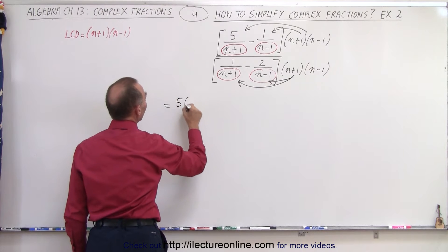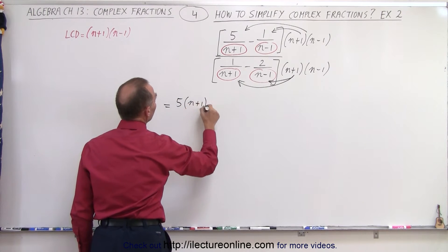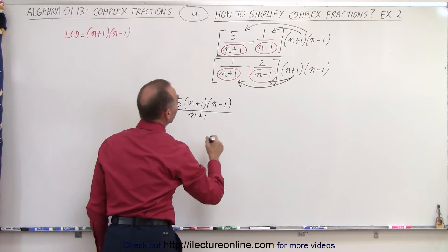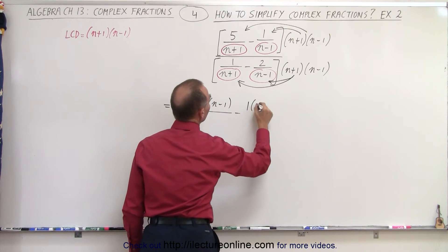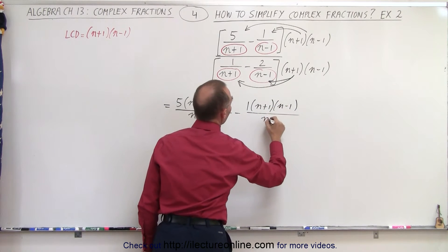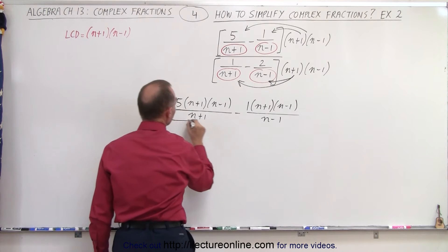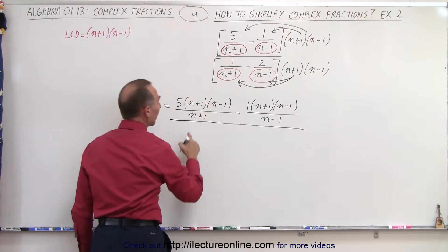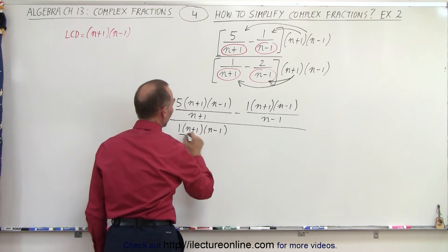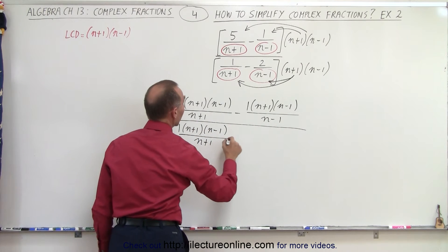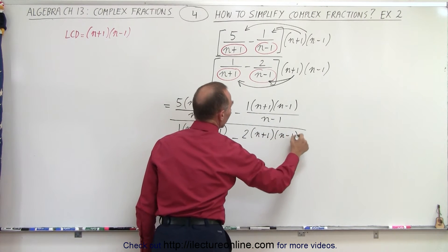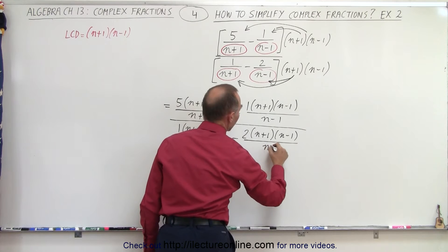This is 5 times n plus 1 times n minus 1 all divided by n plus 1. And that's minus 1 times n plus 1 times n minus 1 all divided by n minus 1. So that's the numerator. And then we divide that all by the denominator. 1 times n plus 1 times n minus 1 all divided by n plus 1 minus 2 times n plus 1 n minus 1 all divided by n minus 1.